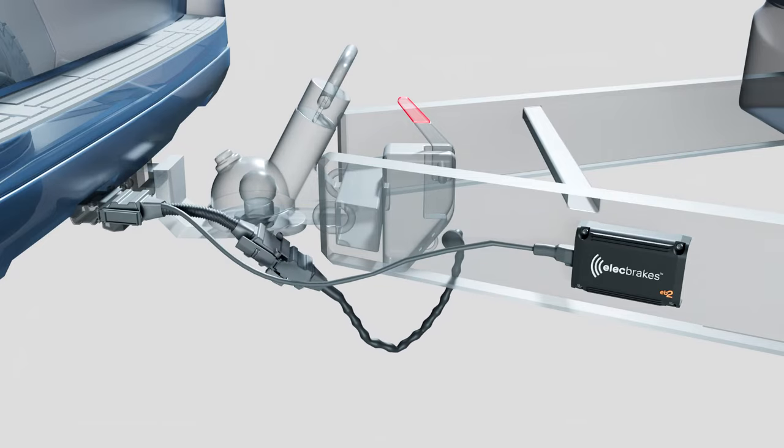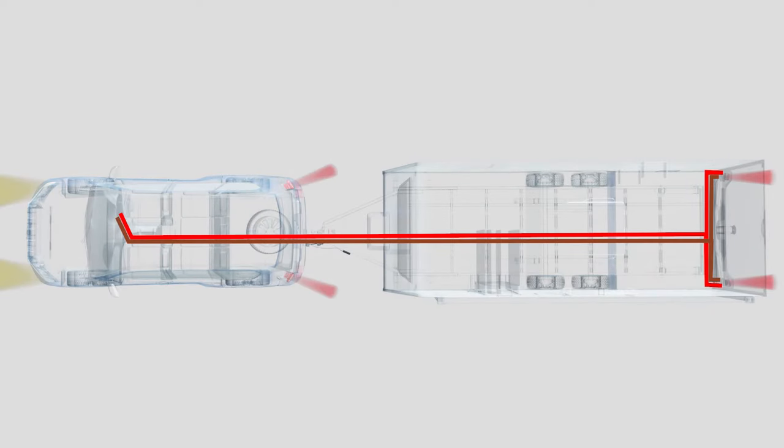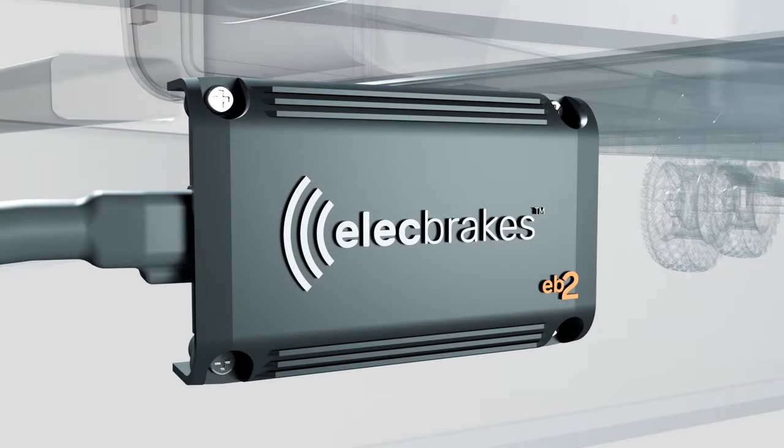Your tow vehicle has existing wiring to power the taillights and brake lights of your trailer or caravan. From its position on the drawbar, ELEC Brakes controls the amount of power delivered from your tow vehicle to the electric brakes on your trailer or caravan.